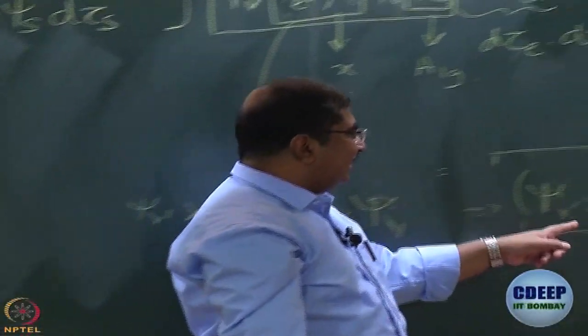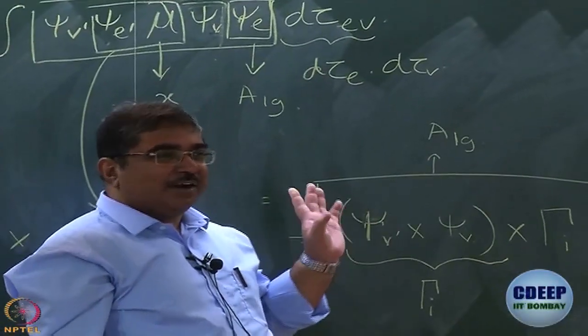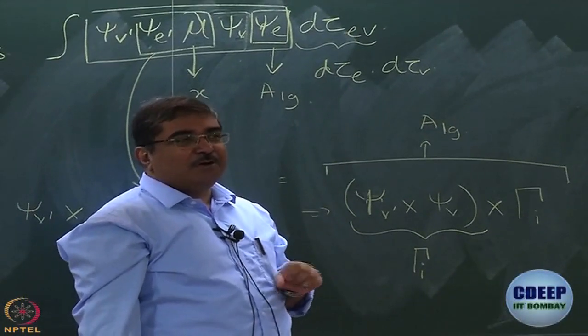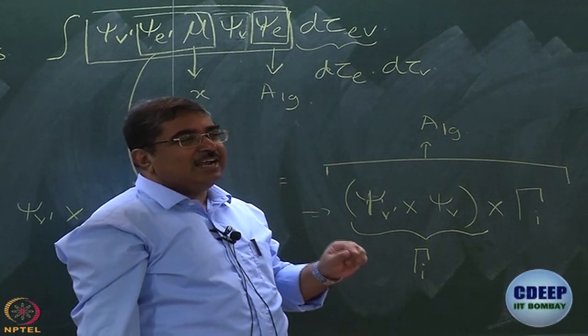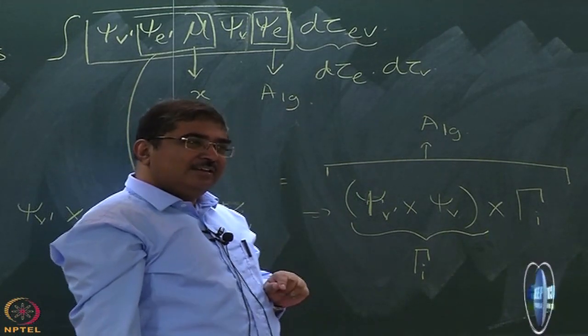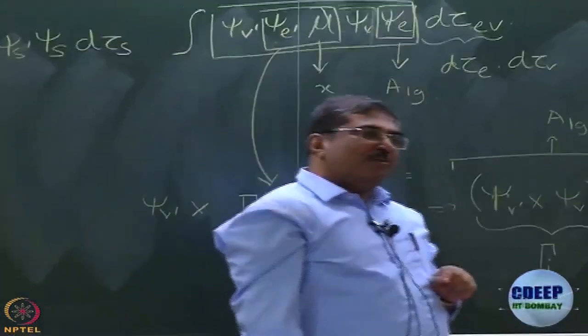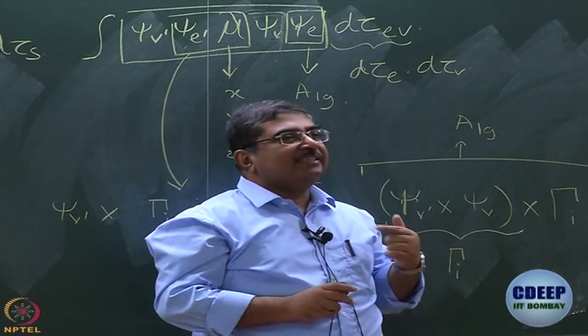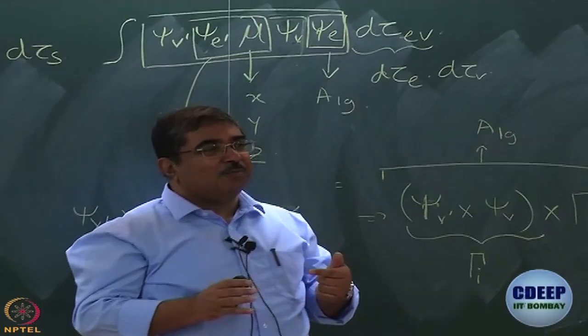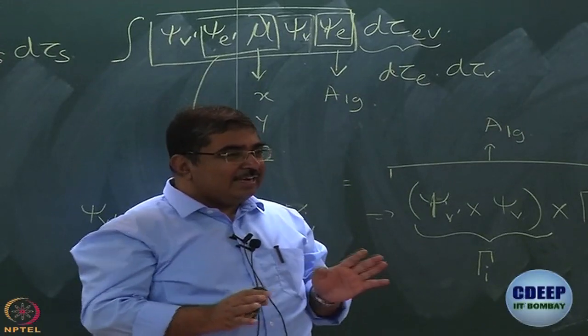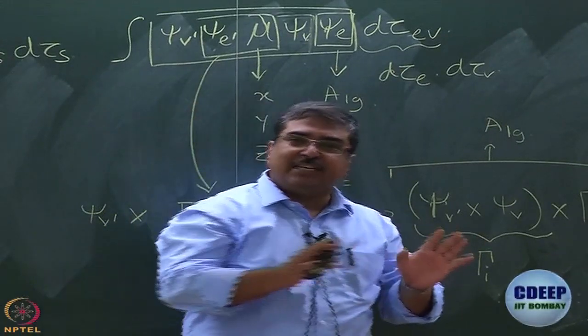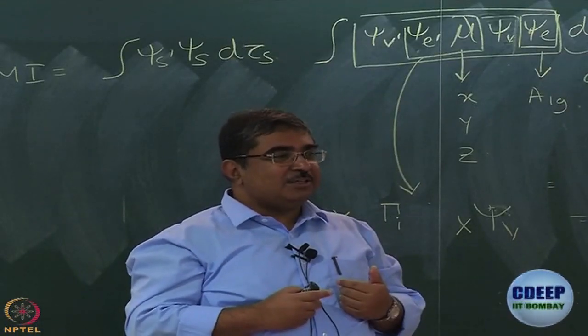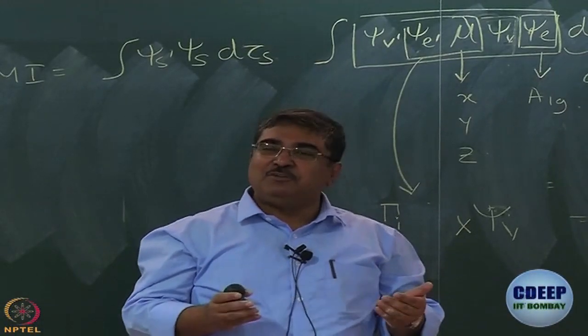We are saying that this psi B and psi B dash are either 0 or 1. What do we already know about the symmetries of V equal to 0 wave function and V equal to 1 wave function? V equal to 0 wave function is totally symmetric. What is it? V equal to 1 wave function has the same symmetry as the normal mode.